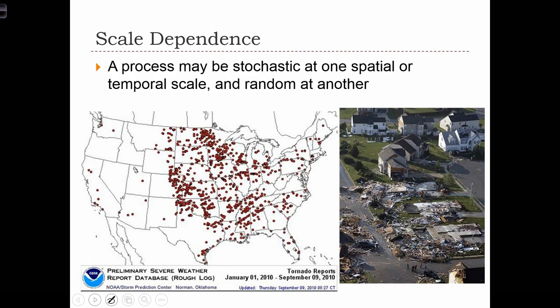Some processes are stochastic at one scale and random at another. Take, for example, the probability of there being a tornado at a specific location. If the scale of analysis is the United States, we can certainly assign different probabilities to different parts of the country based on where we've observed tornadoes in the past. We can call some areas low probability areas and others high probability areas.